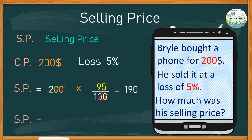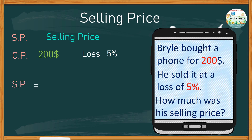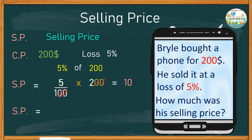So the selling price is 190 dollars. Let's try a different method using the same problem. With a cost price of 200 sold at 5 percent loss, we find 5 percent of 200. Five percent is expressed as 5 over 100, and 'of' means multiply by 200. Canceling the two zeros above and below, we get 5 times 2, which is 10. The selling price is 200 minus 10, which equals 190.